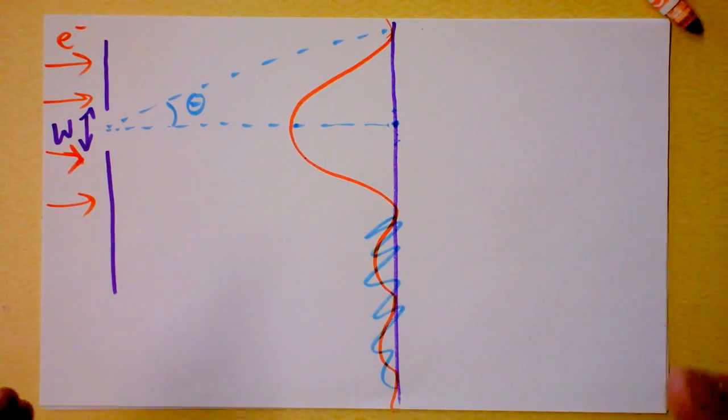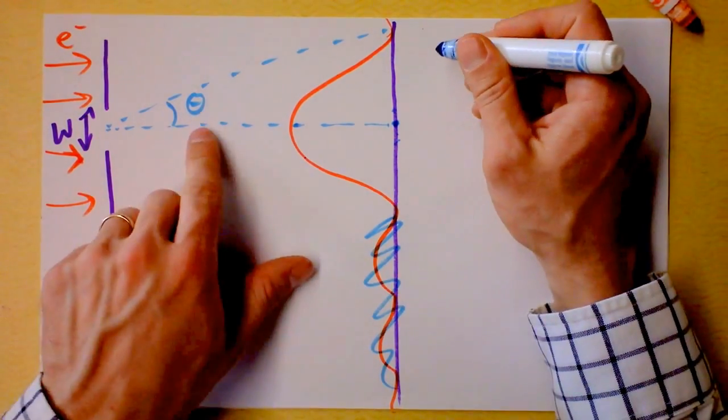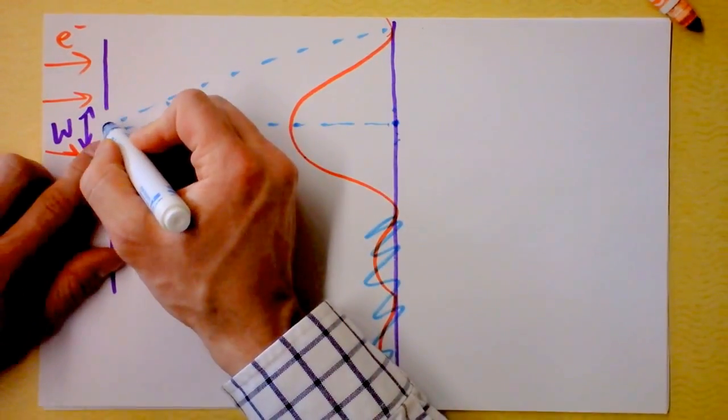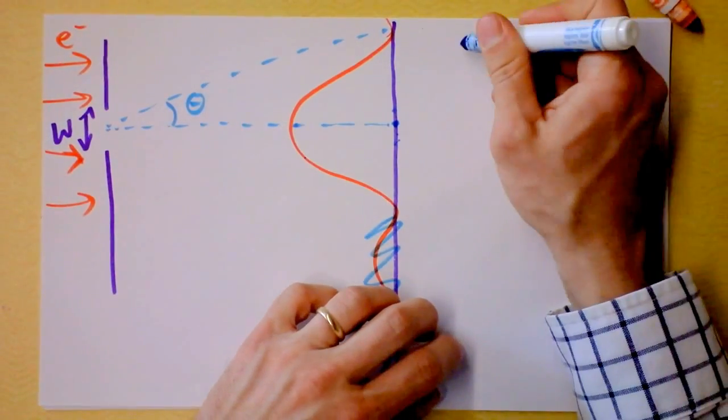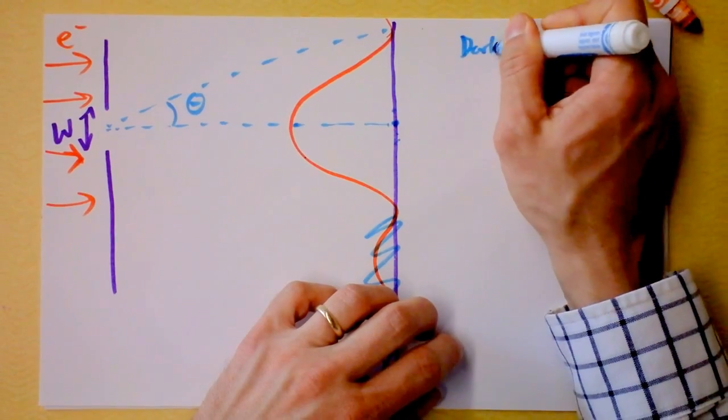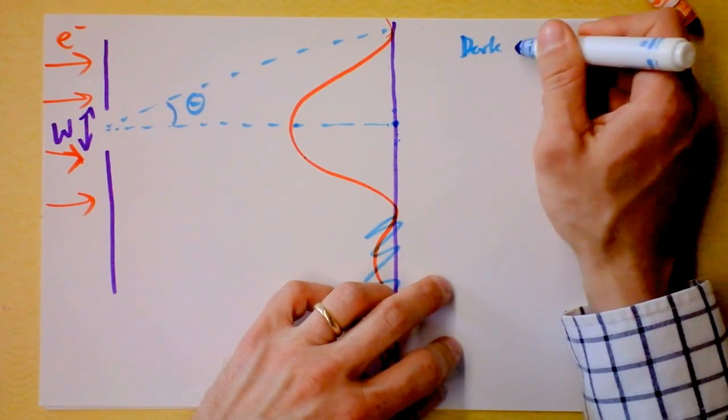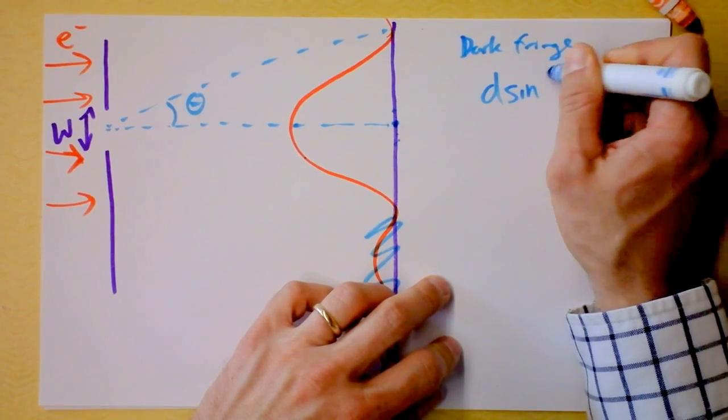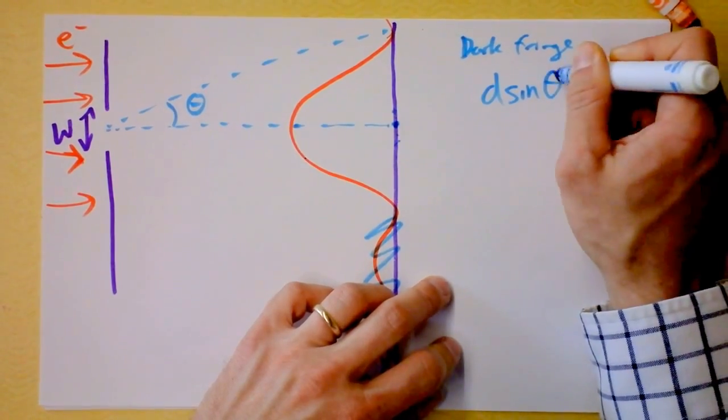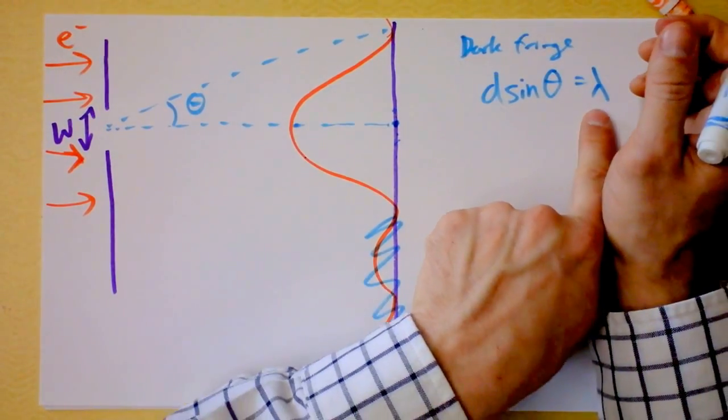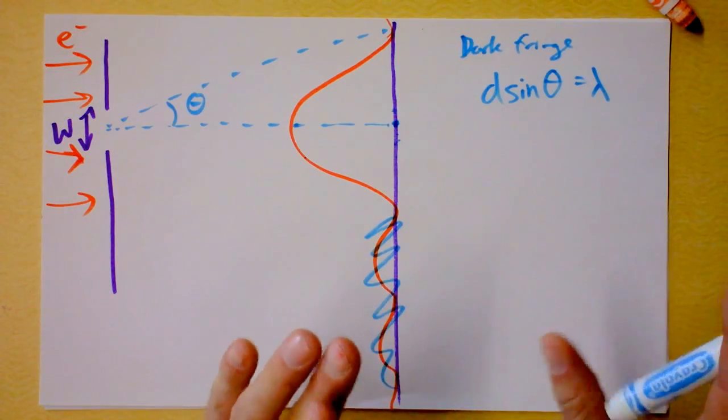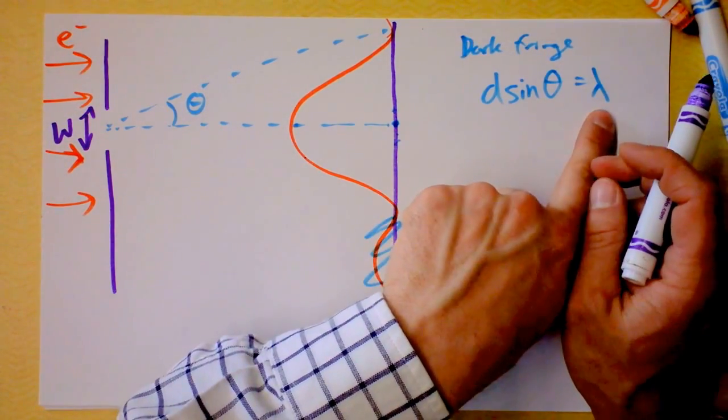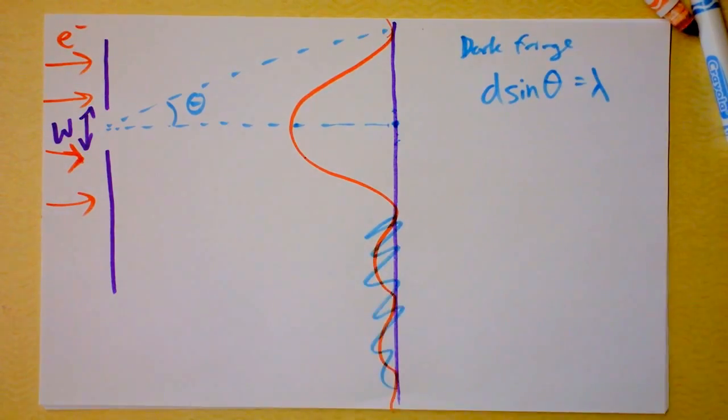So electrons are interfering with themselves. I want to first define where that dark fringe is. Remember, for single slit diffraction, it's as if there are two little double slits. I'm not going to go through that. But I'm going to tell you that a dark fringe appears here. My dark fringe is at d times sine of theta is a wavelength. And we're talking about the wavelength of the electron, so we're fully quantum here. This might be a huge headache for you. I don't know. But I'm okay saying that the dark fringe is where d sine of theta is the wavelength of the electron.